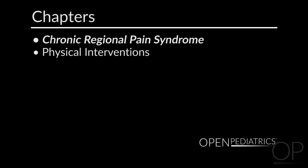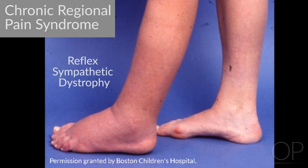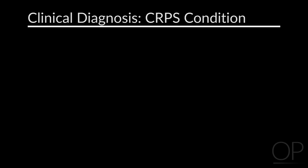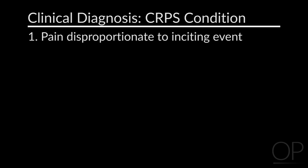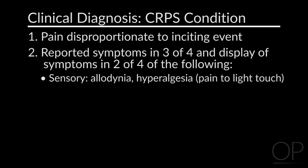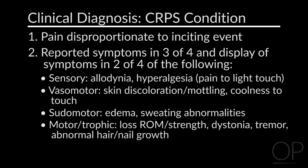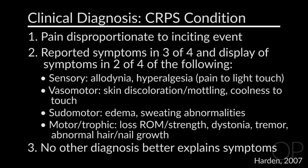Today I'll be talking about interventions that primarily arise from the literature and treatment for children and adolescents with Chronic Regional Pain Syndrome. You might be more familiar with this condition known as Reflex Sympathetic Dystrophy. The clinical diagnosis for Chronic Regional Pain Syndrome is pain disproportionate to the inciting event, with reported symptoms in three out of four of the following: sensory, vasomotor, pseudomotor, and motor and trophic changes, and no other diagnosis better explains these signs and symptoms.